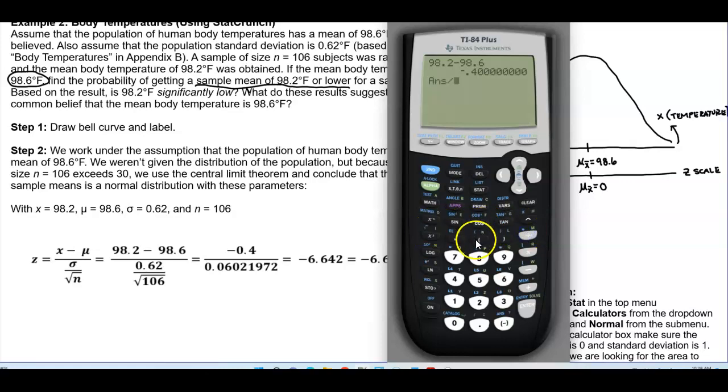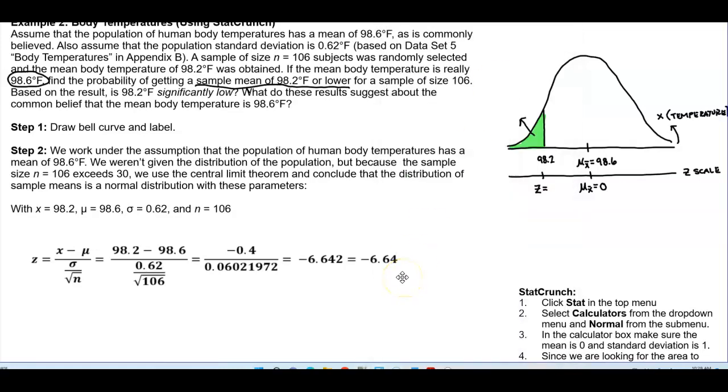And that's what we get for the numerator is negative 0.4. And then we're going to divide that. We're going to put this in parentheses because we have a fraction denominator 0.62. And then we're going to divide that by the square root of n, which is 106. And then we're going to close the parentheses and that gives us negative 6.642. And so if we round that to two decimal places, then we get negative 6.64.